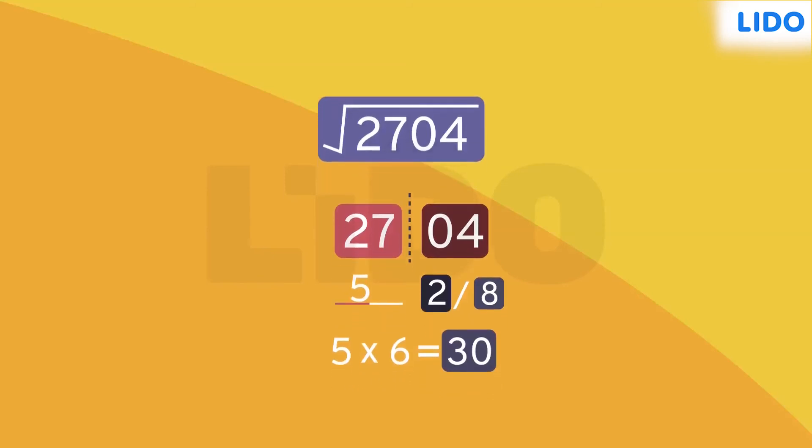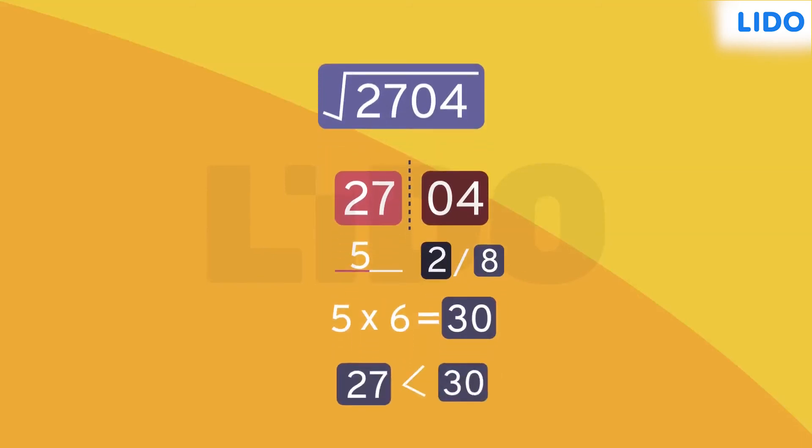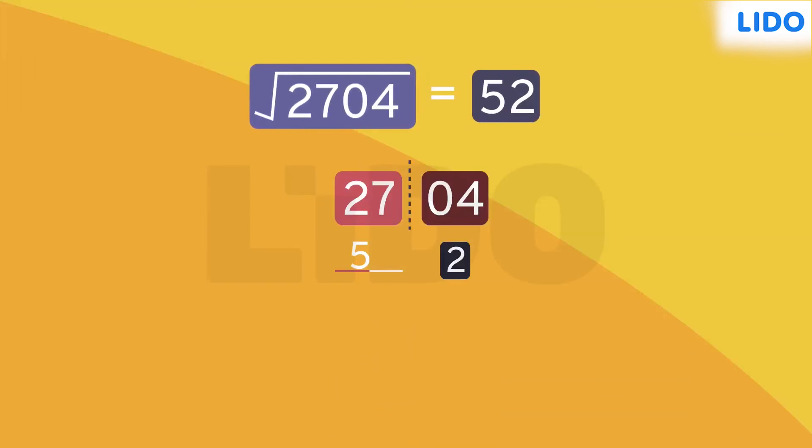Here we find that 27 is less than 30. Thus, the smaller number 2 is selected for the units place. Hence, the square root of 2704 is 52.